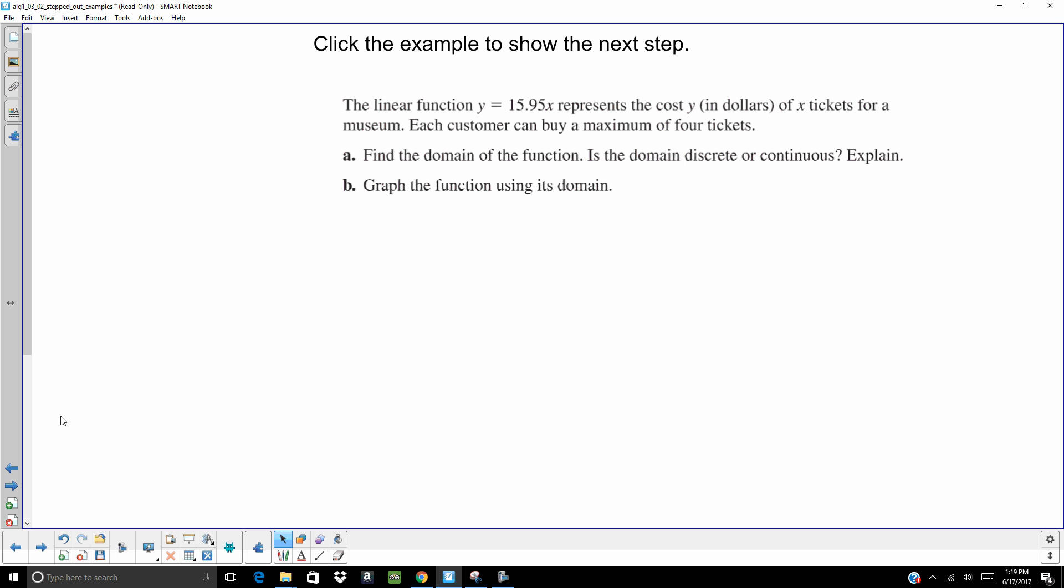So the linear function y equals 15.95x represents the cost y in dollars of x tickets for a museum. Each customer can buy a maximum of four tickets. Find the domain of the function. Is the domain discrete or continuous? Explain. And then we want to graph the function using its domain.